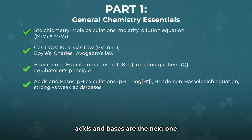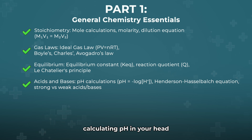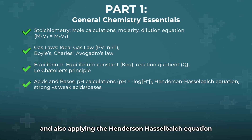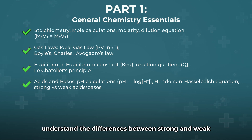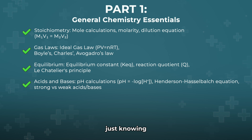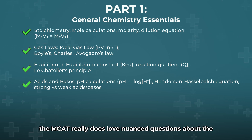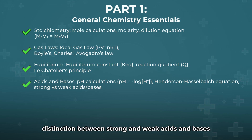Acids and bases are the next one, and they are also very heavily tested. You really need to make sure you're comfortable calculating pH in your head and also applying the Henderson-Hasselbalch equation for buffer systems. You want to definitely understand the differences between strong and weak acids and bases, and be able to predict pHs just knowing whether it's a strong or weak acid or base. The MCAT really does love nuanced questions about that distinction.